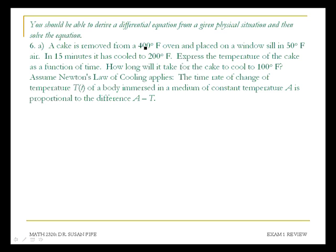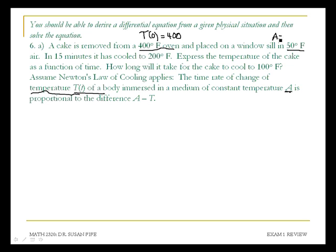On problem 6A, we have a cake that's removed from a 400-degree oven. So this is the initial temperature — T(0) = 400, where T(t) is the temperature at any time. The cake is placed on a windowsill in 50-degree air. This is the temperature of the room, the medium of constant temperature. This is our value for A: A is 50 degrees.